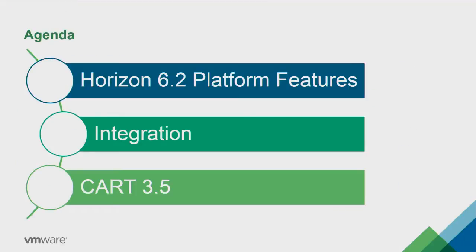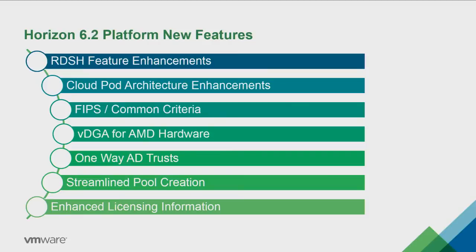What we're going to talk about today is Horizon 6.2. This release, although it's a dot release, actually has a lot to it. We broke it up into a couple of categories: loosely platform features, integration with other parts of vSphere, as well as client and agent. CART stands for Client Agent Release Train — version 3.5 — so we've got some new clients coming as well as a new agent that will run on those VMs. Instead of reading all of these from the agenda, I'm just going to jump into each one.